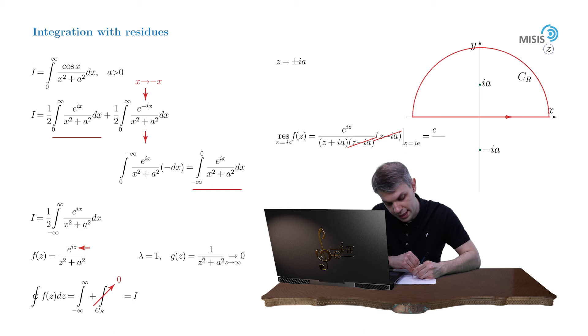So we obtain e to the minus a over 2iA as the residue of the function.